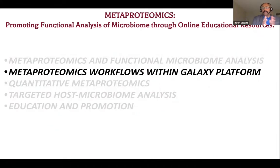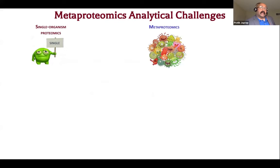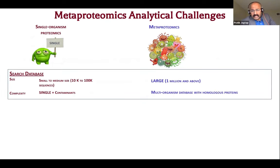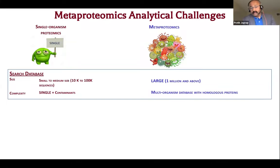So I wanted to make a distinction between microbiome analysis and functional microbiome analysis, wherein we are interested in the proteins expressed and hence the functions expressed by the microbiome. One of the analytical challenges in metaproteomics is that in single organism proteomics, the search databases are relatively small. There is a single organism, and most of the proteins detected come from that organism. While in metaproteomics, the databases are usually very large because you are concatenating all the proteomes from various taxonomic members of the metaproteome.